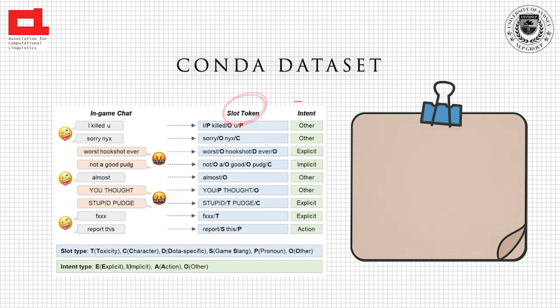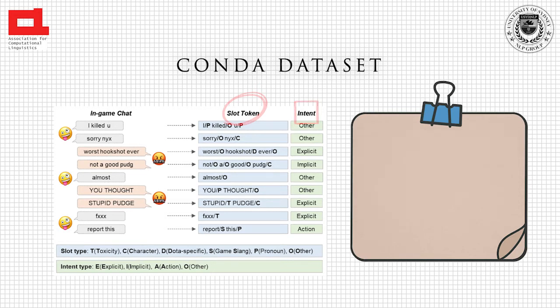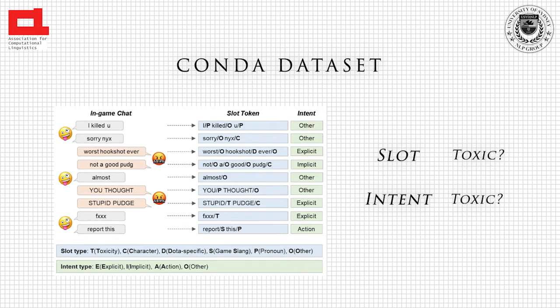The second is the utterance-level intent annotation, with four labels: explicit toxicity, implicit toxicity, action, and other. With this, we can find a toxic intent even though the utterance does not contain any toxic words.